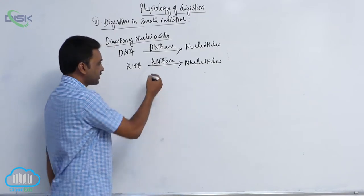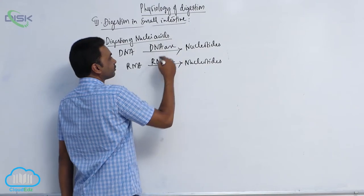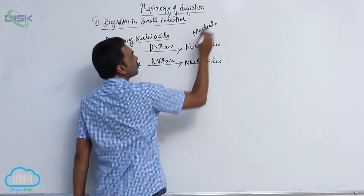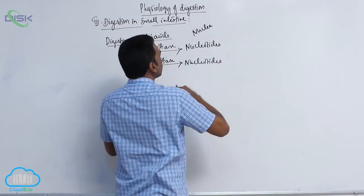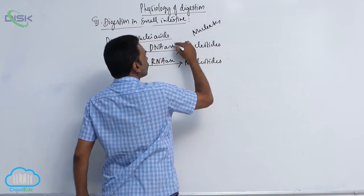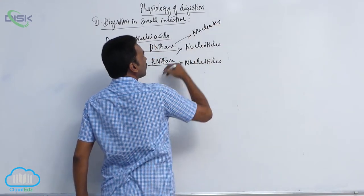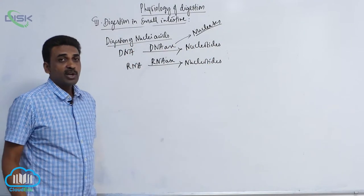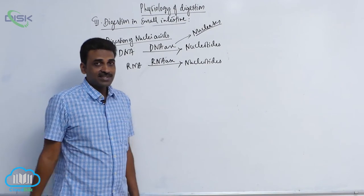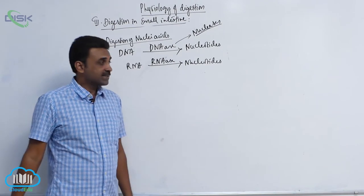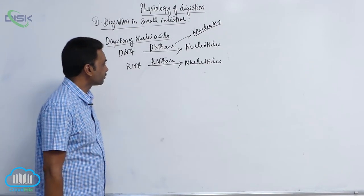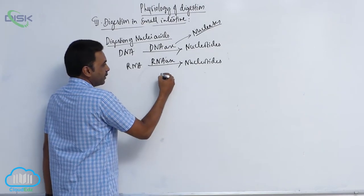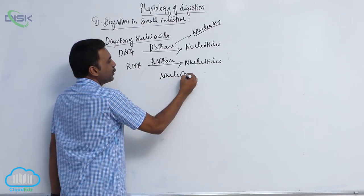They are called nucleases because they act on nucleic acids. DNA and RNA are nucleic acids. Now these nucleases produce nucleotides.